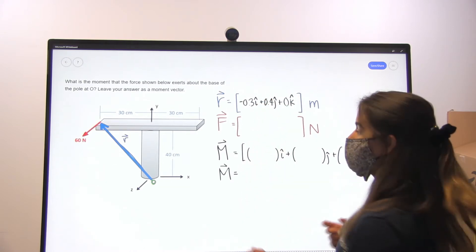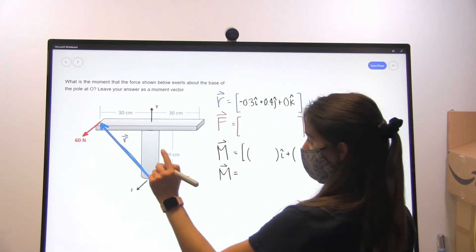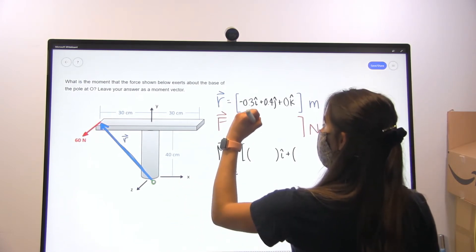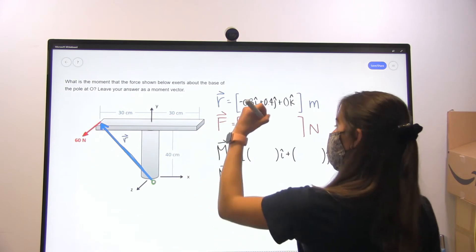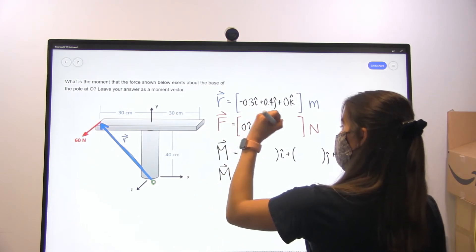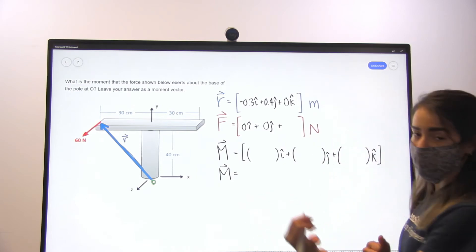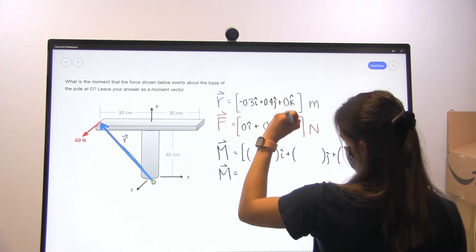Now for the force, we have nothing in the x direction, so 0i, nothing in the y direction, 0j, and finally 60 newtons in the positive z direction. So 60k.